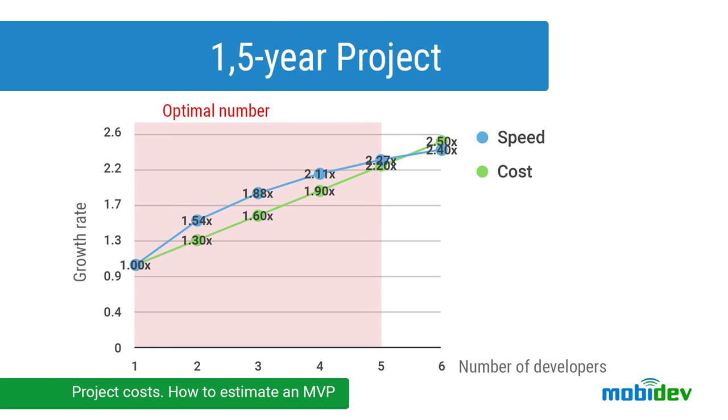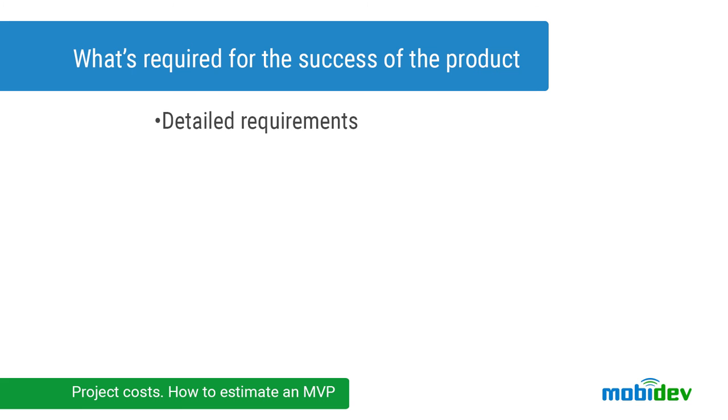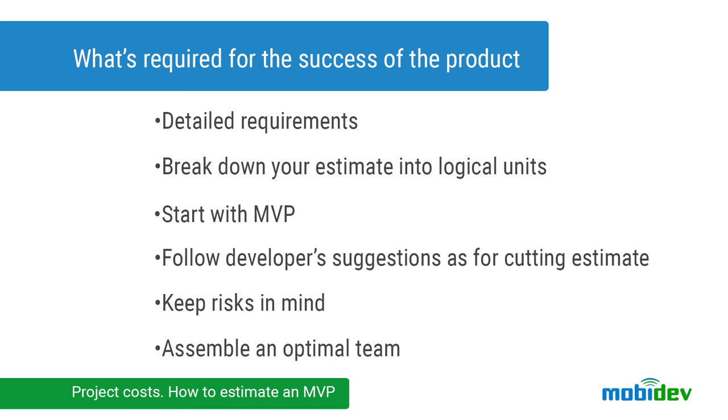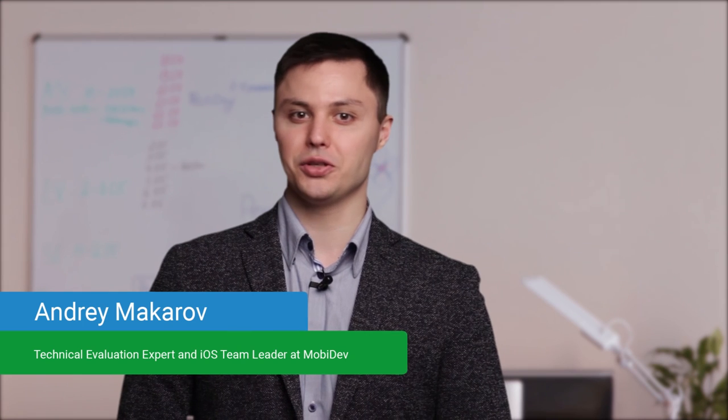No more than five developers should be involved in a project. The bigger the team, the faster but more expensive the development. We can say that development of a software product requires careful elaboration of its functionality. Requirements must be formed properly and form logical units. If budget can't allow everything, some logical units may be postponed for the next version. The product owner should be open to developers' suggestions for cutting estimates by using standard UI elements and controls or other ways specialists may suggest. It's vital to keep an eye on risks and try to eliminate them. It's also good to avoid hiring a big team for small projects. Thank you for your attention — stay tuned with Mobidev!